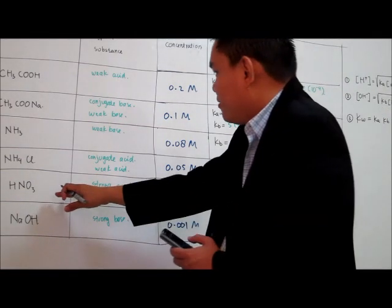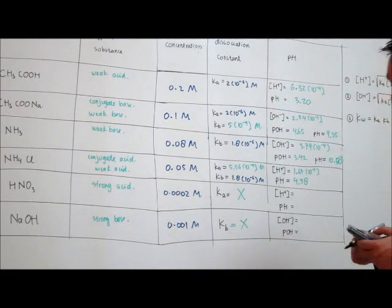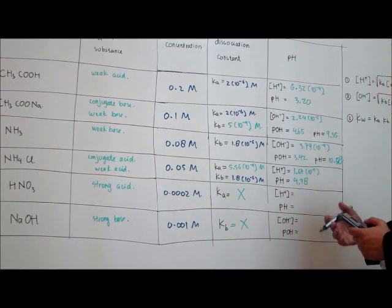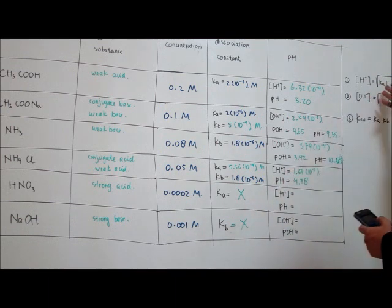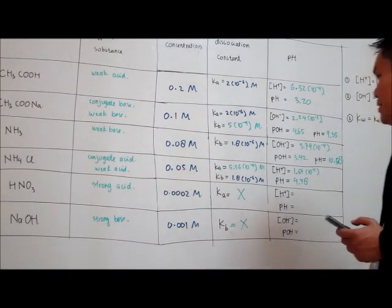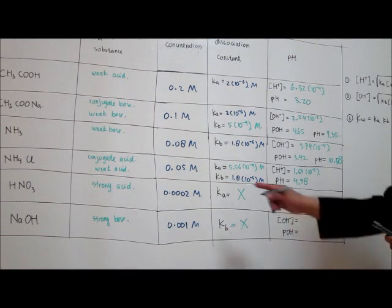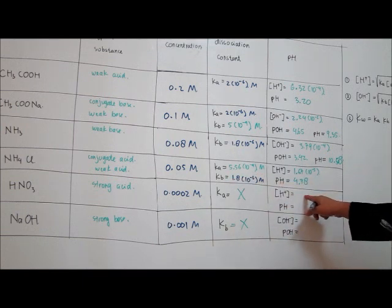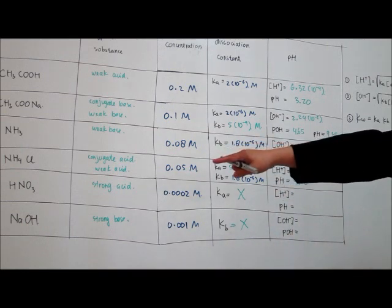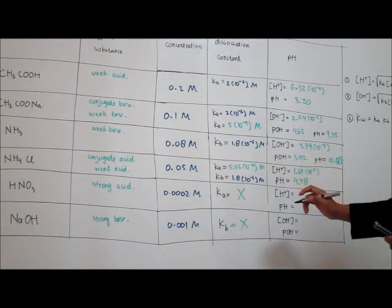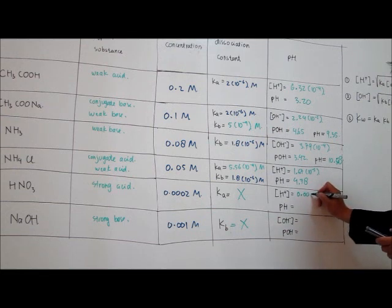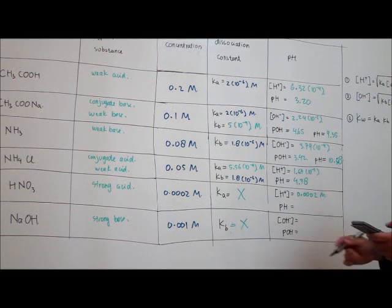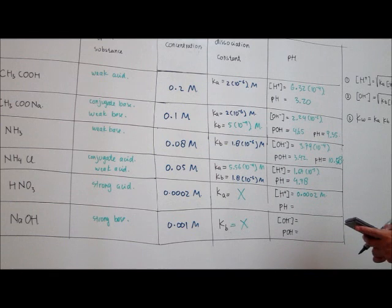How about the fifth row, when you have a strong acid? It's even easier — you don't even need Ka and you don't need to use formula number one or two. HNO₃ is a monobasic strong acid, so we just copy the concentration: the concentration of H⁺ will be the same as the concentration of HNO₃, which is 0.0002 mol per dm³. The pH is just the negative log of that number: 3.70.